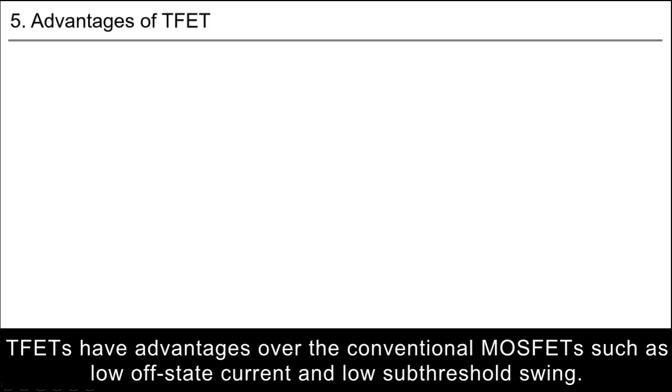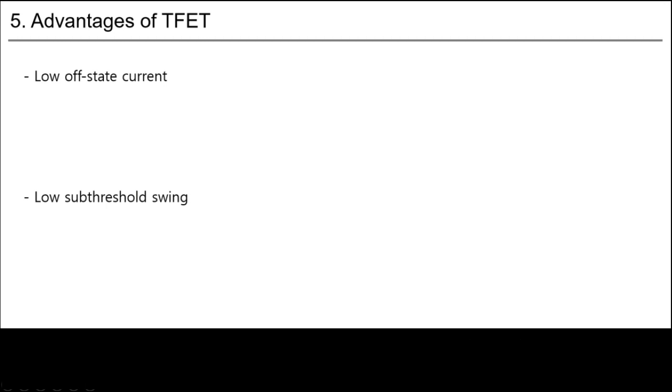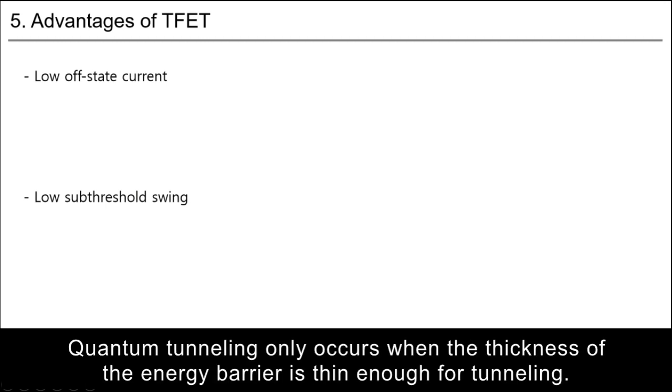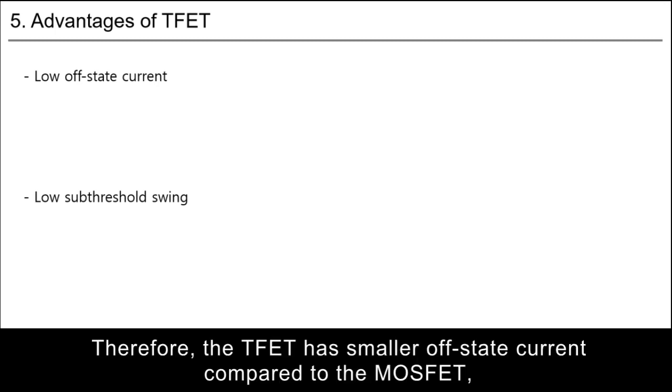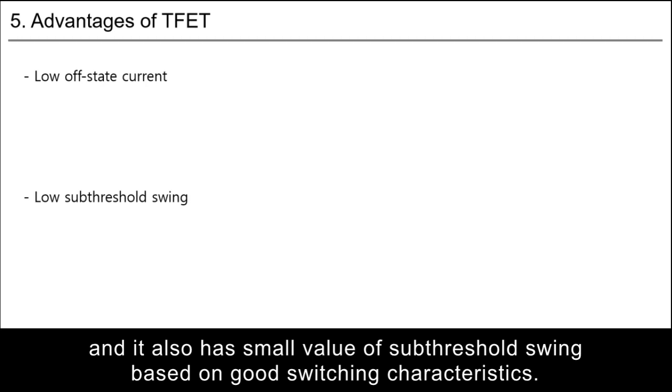TFETs have advantages over conventional MOSFETs, such as low off-state current and low subthreshold swing. Quantum tunneling only occurs when the thickness of the energy barrier is thin enough for tunneling. Therefore, the TFET has smaller off-state current compared to the MOSFET and also has small value of subthreshold swing based on good switching characteristics.